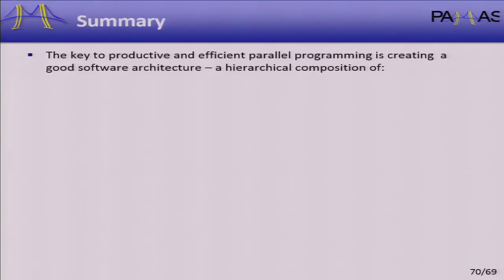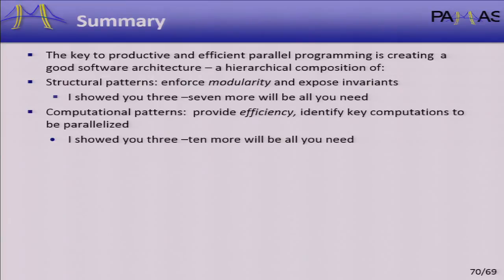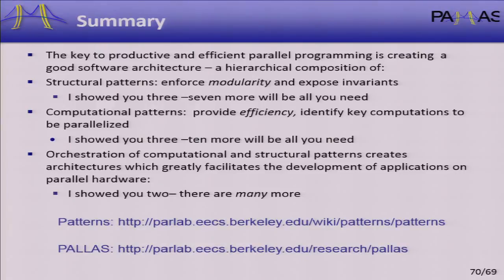In summary: the key to efficient parallel programming is software architecture — the composition of structural patterns (I showed you three, seven more will do it) and computational patterns (I showed you three, ten more will do it). These give you efficiency and allow you to identify the key computations to be parallelized. Putting these together allows us to do real applications, and I showed you a couple that are really out there working.